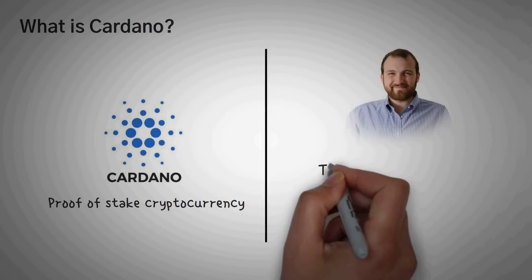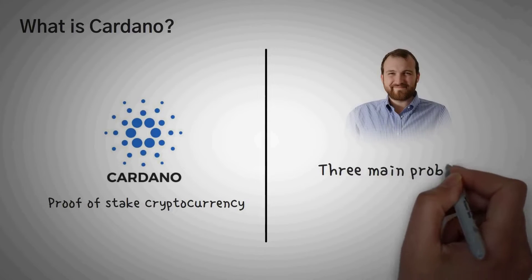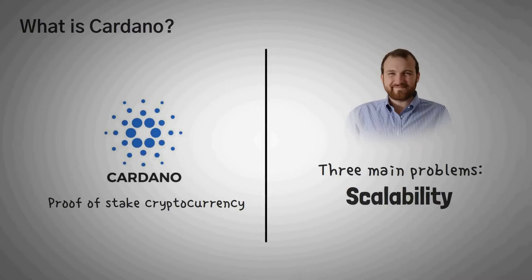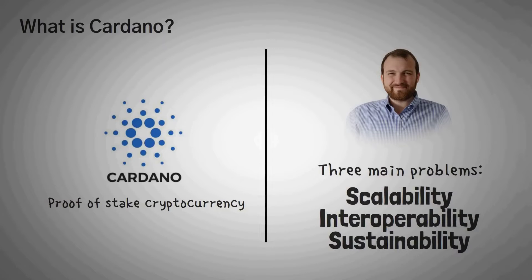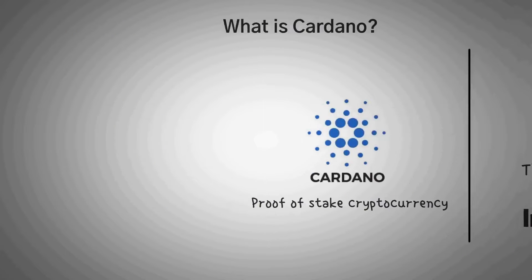Basically, Hoskinson saw that cryptocurrencies would suffer from three main problems. These problems are scalability, interoperability, and sustainability. Let's go through each of these issues to understand the intentions behind the project.